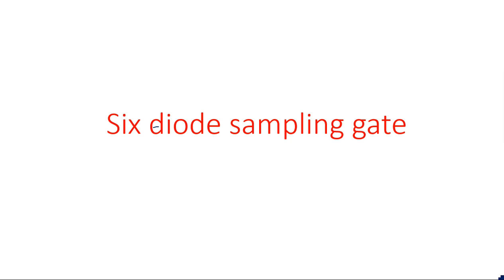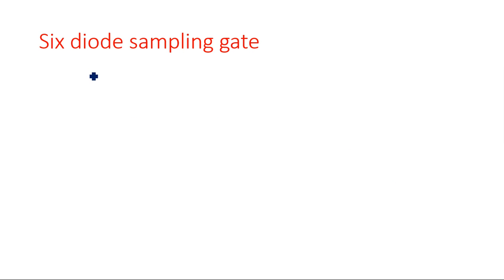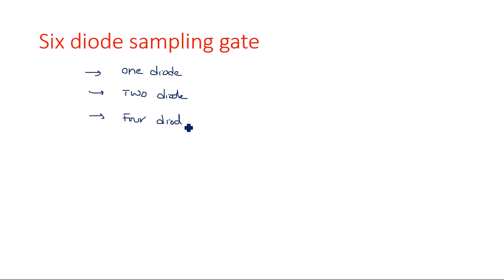In this video I am going to explain about the six diode sampling gate. In the previous videos we have seen one diode sampling gate, two diode sampling gate, and four diode sampling gate. The one diode sampling gate is a unidirectional sampling gate where it can transmit only the sample of either positive or negative input signal.